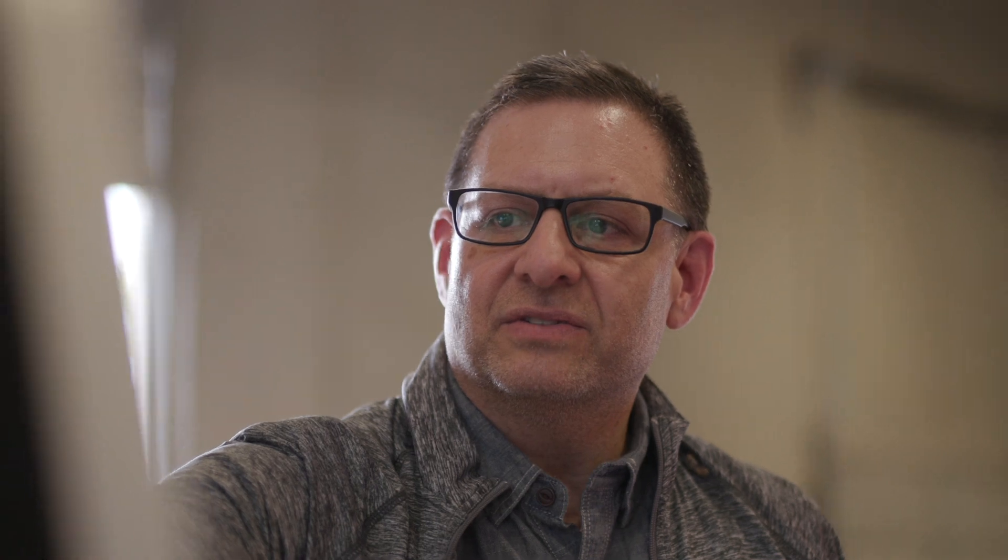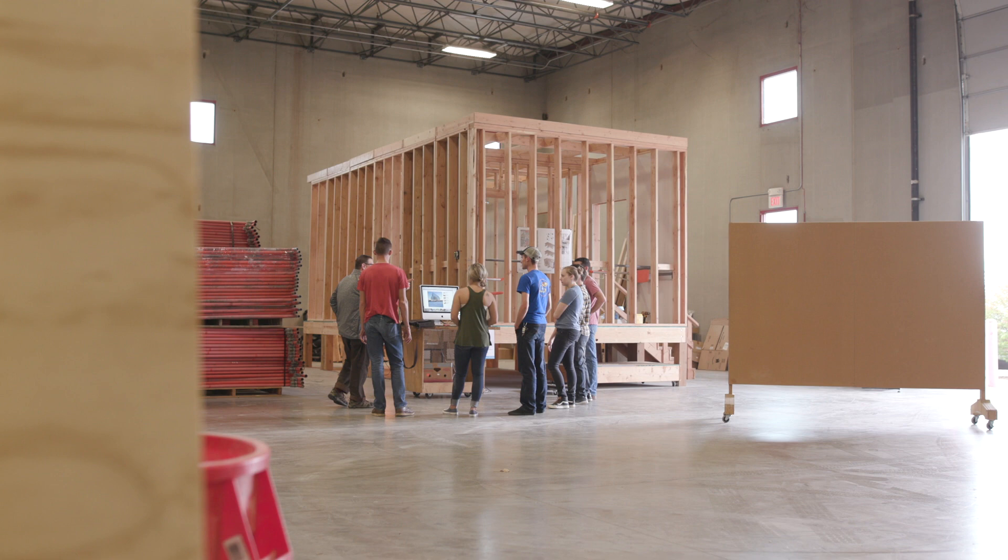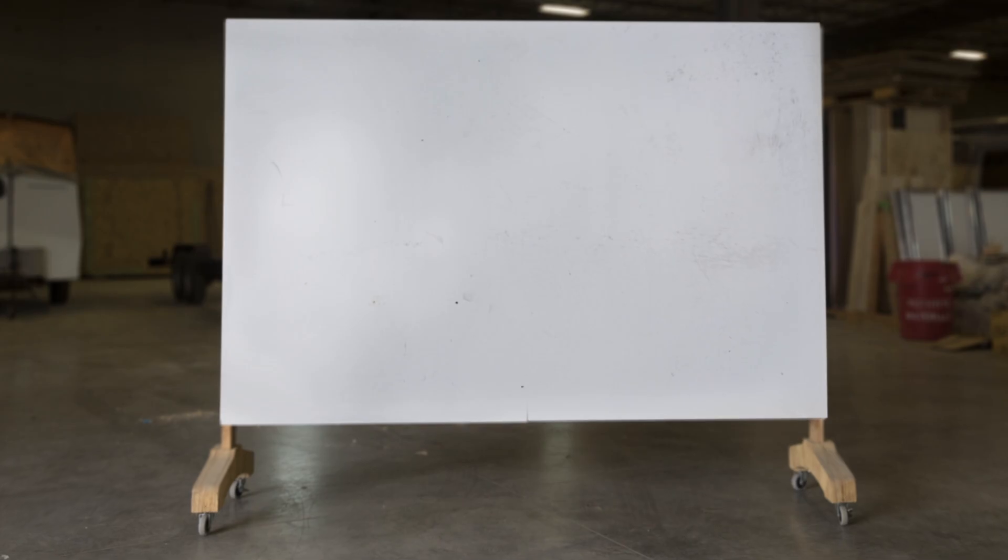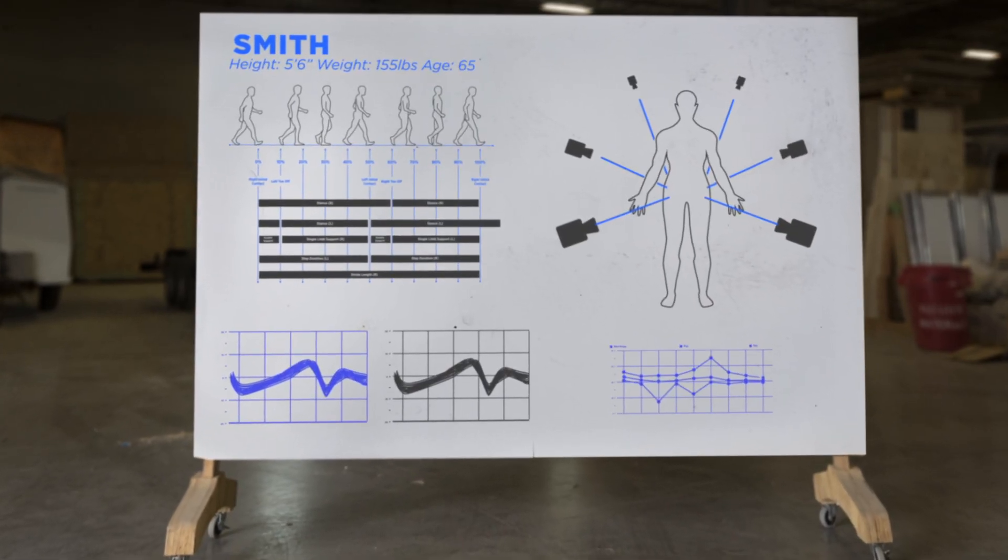We have a model that shows the mass transit line and stepping down. So with predictive algorithms, we can start to look at those patterns and see if someone has some health markers that should be taken care of.